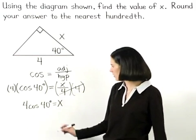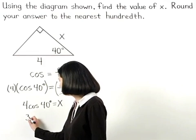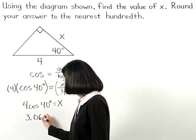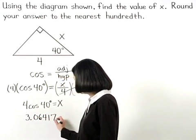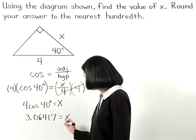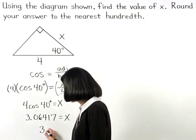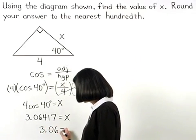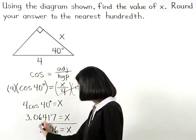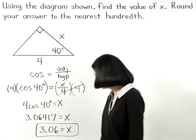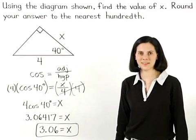Either way, we find that 3.06417 equals x. And rounding to the nearest hundredth, 3.06 equals x.